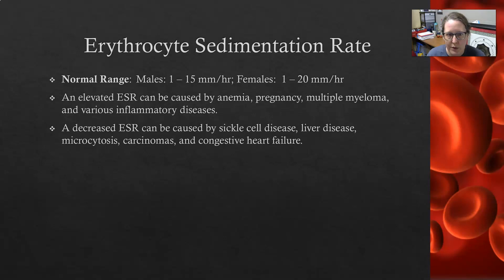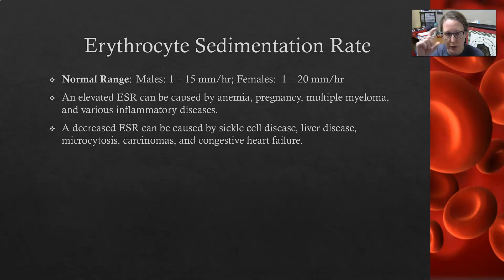The normal range for the SED rate for males is 1 to 15 millimeters — that would be the clear area at the top of the tube where there are no red cells — and that's per hour. For females, it would be 1 to 20 millimeters per hour.